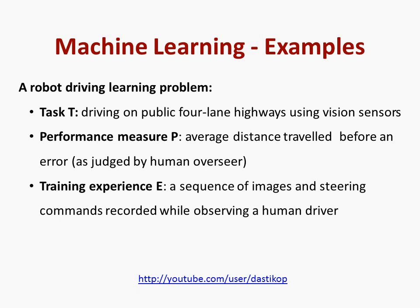Another machine learning example is a robot driving learning problem. Task T for this is driving on public four-lane highway using vision sensors. The performance measure P is average distance travelled before an error as judged by the human overseer. Training experience E is a sequence of images and steering commands recorded while observing a human driver.